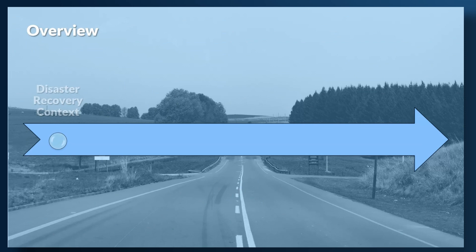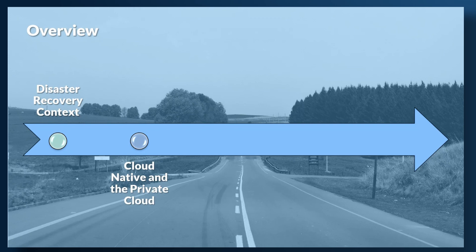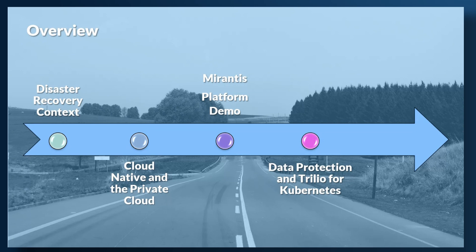We're going to start talking about the context in which we're operating — what is disaster recovery, when you need it, and why what we're going to talk about today is really important. We'll talk about cloud-native technology and why these solutions depend on its features. Then we'll show you the Mirantis platform, highlighting how strongly everything depends on open-source capabilities. After which, Stefan will talk about data protection and intelligent recovery from Trilio, and then show the continuous recovery demo, which is the feature of this presentation.